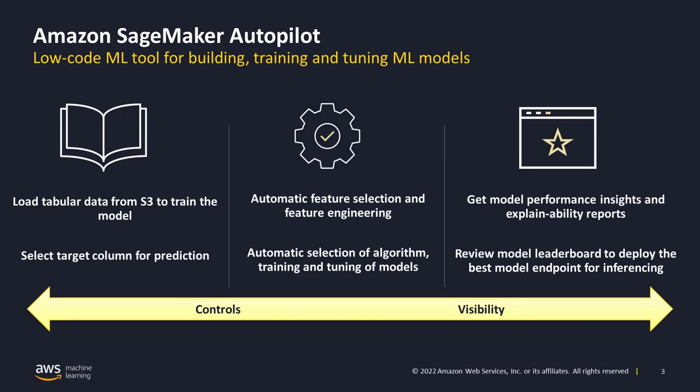Autopilot is a low-code tool for building, training, and tuning machine learning models. All you have to do is upload your tabular data to S3, select your target column, and Autopilot picks it up from there. It does automatic feature engineering and feature transforms, selects the algorithms, trains your models, finds the best parameters, tunes them, and provides you with a stacked ranked list of models. It also provides an explainability report and performance insights, offering you controls as well as visibility into your machine learning models.